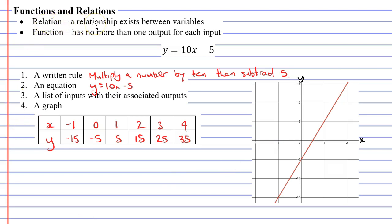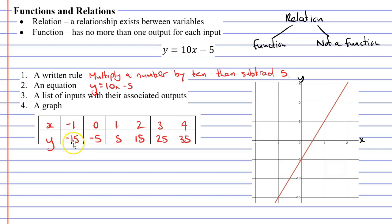So that explains what a relation is — so what then is a function? Relations can be split into two categories: a relation is either a function or it's not a function. By definition, a function has no more than one output for each input. Looking at our table of values, if I take an input of negative 1, I only get one output of negative 15. If I take an input of 2, I only get one output of 15. This relation, y equals 10x minus 5, is a function.